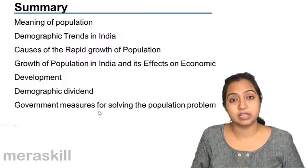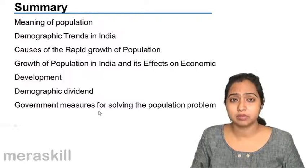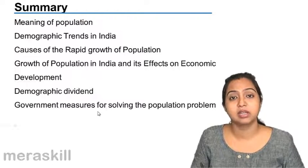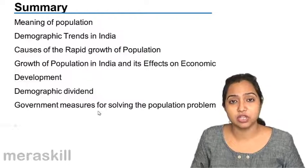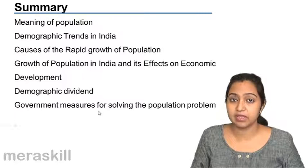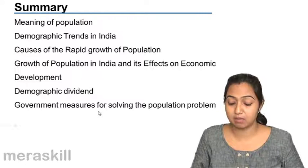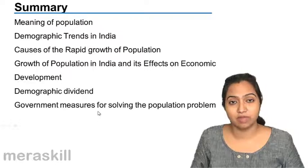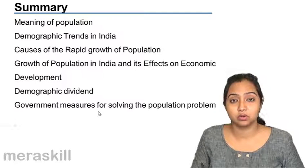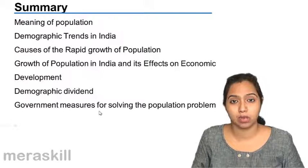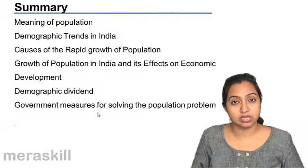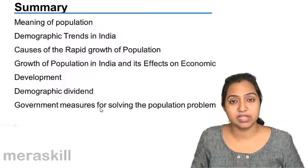Now the government has taken measures. In the first two plans it was not so important, but later, through mass education programs, awareness has come that we should have smaller families, and the growth rate has considerably come down from 2.2 to 1.6. So we are slowly and steadily making progress.